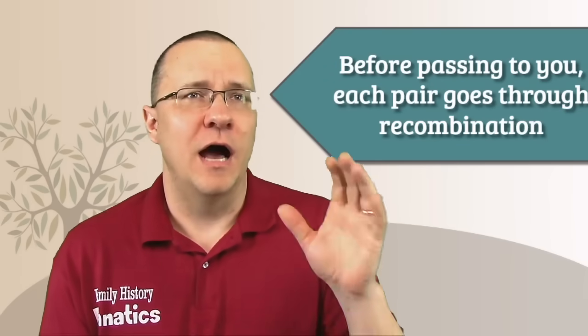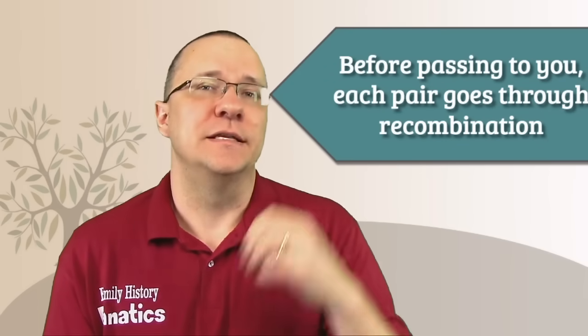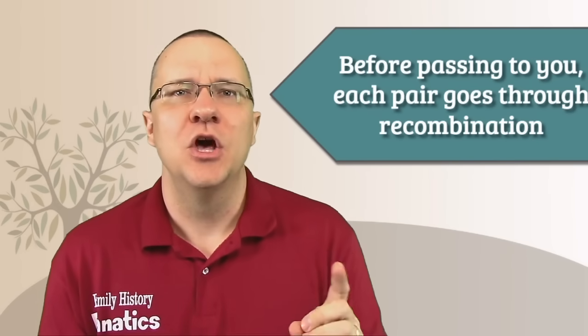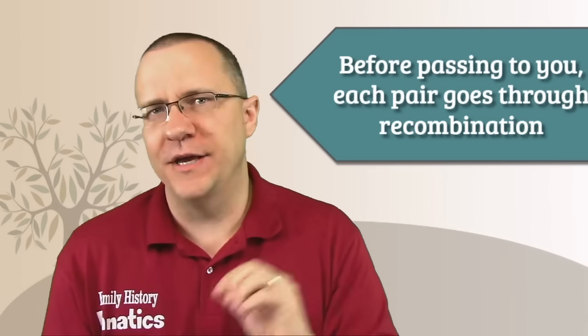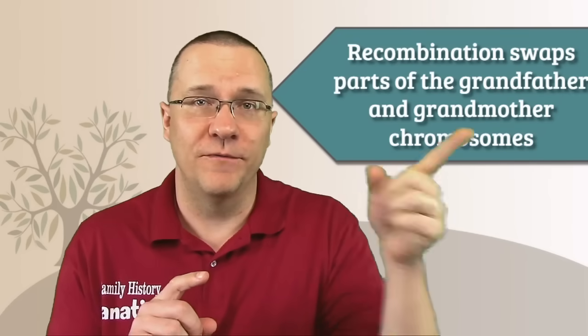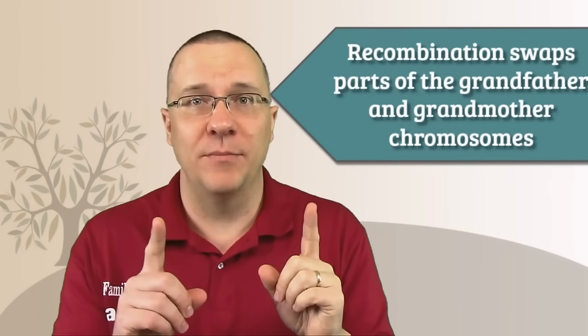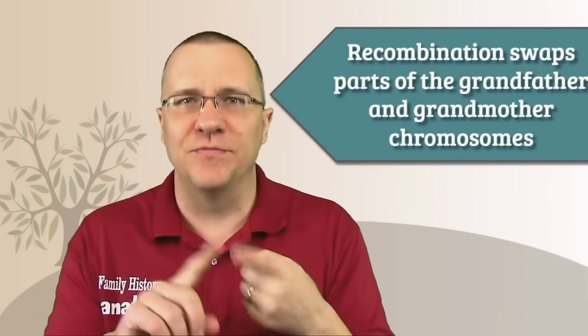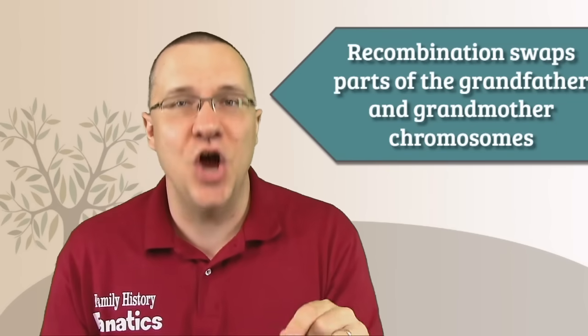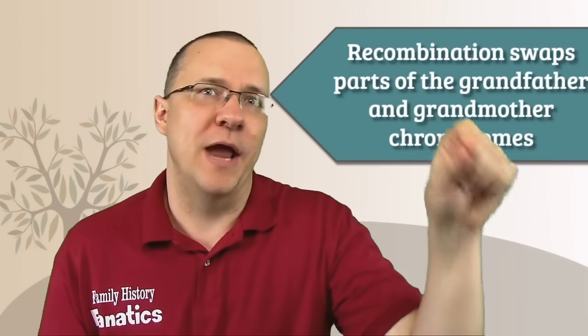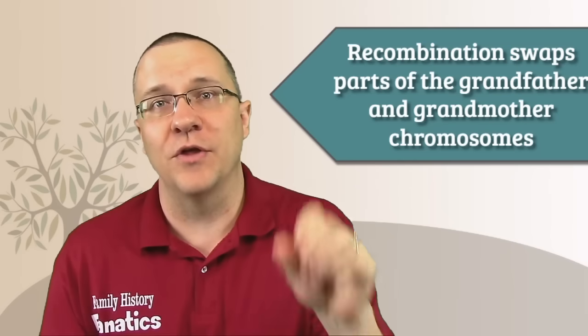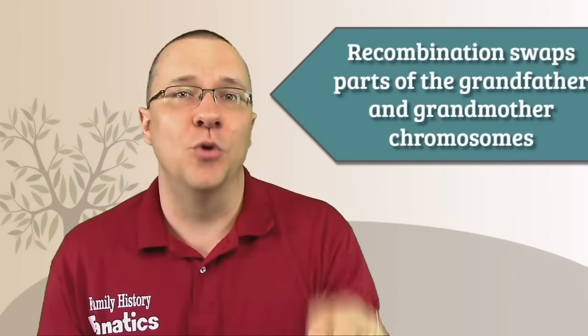Before either one of your parents pass on a set of chromosomes to you, the chromosome, in other words the pair that they have, goes through a process called recombination. During that process, that pair of chromosomes, one from the grandfather, one from the grandmother, they may swap different locations so that the chromosome that's passed on to you is not necessarily from the grandmother or the grandfather, but it is actually a combination of the grandmother and the grandfather chromosomes that your parents have.